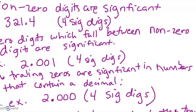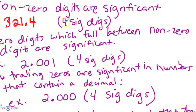By now you're probably wondering which digits of a number are significant. I'm going to go over how we determine how many numbers in a measurement are significant. The first rule is that non-zero digits are significant. For example, 321.4 — all four numbers are non-zero, so it has four significant digits.